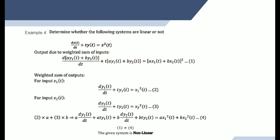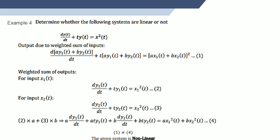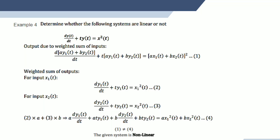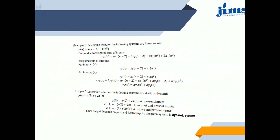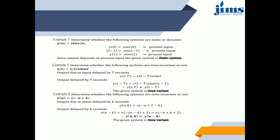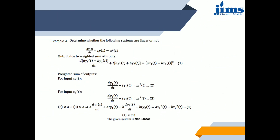Next: determine whether the following systems are linear or non-linear. For dy/dt + t·y² = x²(t), the weighted sum of outputs for input x₁(t) gives dy₁/dt + t·y₁² = x₁²(t), and for input x₂(t), dy₂/dt + t·y₂² = x₂²(t). The given system is non-linear because it does not satisfy the principle of superposition and the principle of linearity.